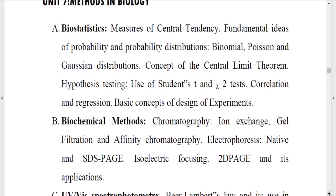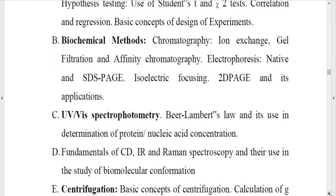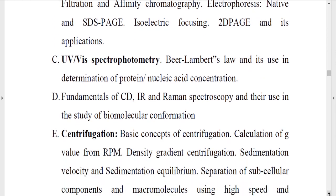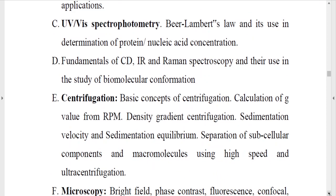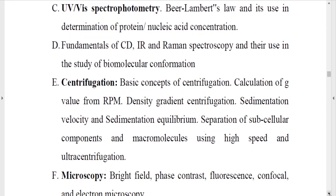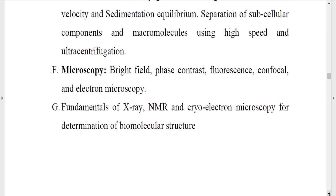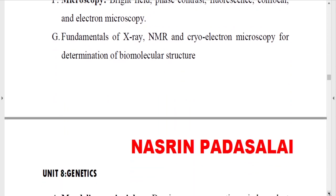Unit seven is Methods of Biotechnology, which includes biostatistics, biochemical methods like chromatography, UV-visible spectroscopy, and fundamentals of CD, IR, Raman spectroscopy, centrifugation, microscopy, X-ray crystallography, NMR, and cryo-electron microscopy.